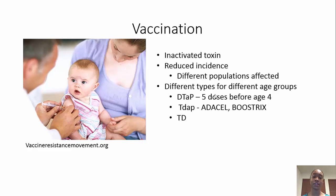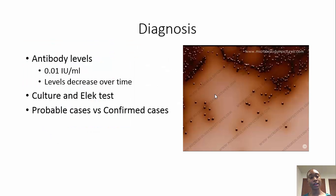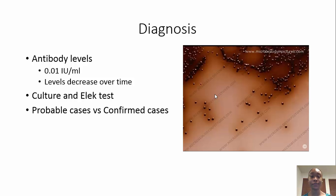Tdap stands for diphtheria, tetanus toxoid, and pertussis. As for diagnosis, a physician or healthcare worker can check the patient's antibody levels. If the patient has 0.01 IUs per mL of the antibody in their blood, they are immune to the disease, meaning they probably don't have diphtheria and likely have some other illness. Diphtheria must be confirmed by a positive culture.